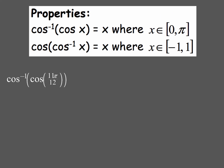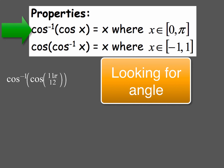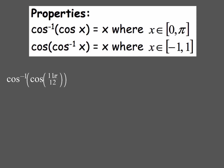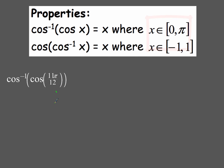Now moving on to cosine and arccosine. For the first problem, arccosine is the outside function, so we're finding an angle and the domain restriction is 0 to π. Is 11π/12 between 0 and π? Since π equals 12π/12, and 11π/12 is just under that, it fits within quadrants 1 and 2. So using the shortcut, these cancel and the answer is 11π/12.